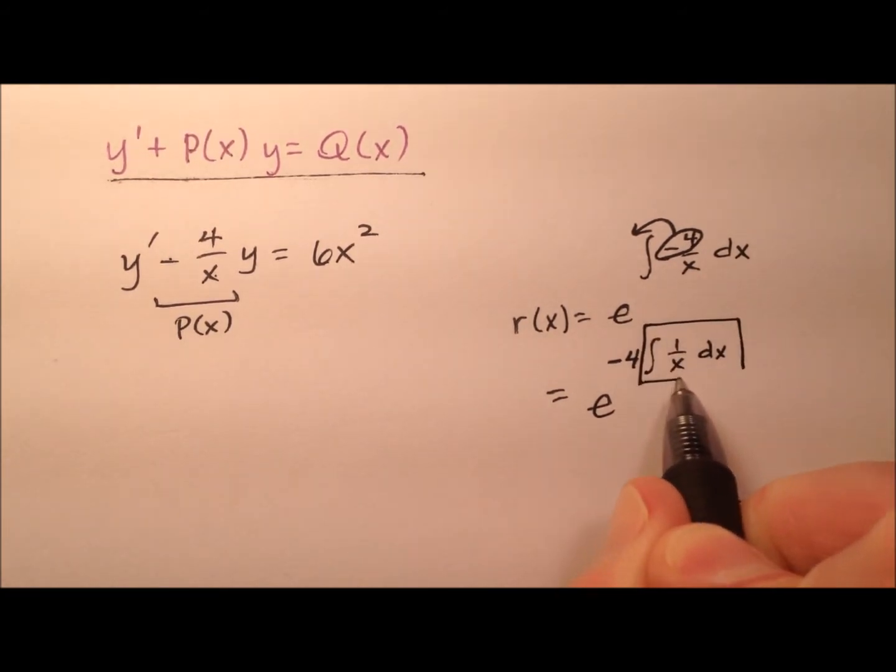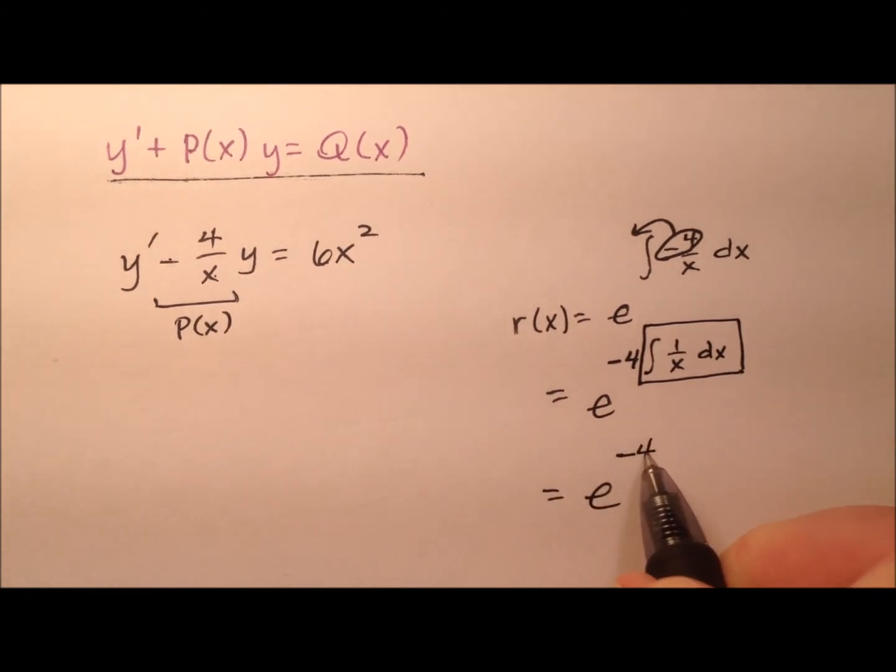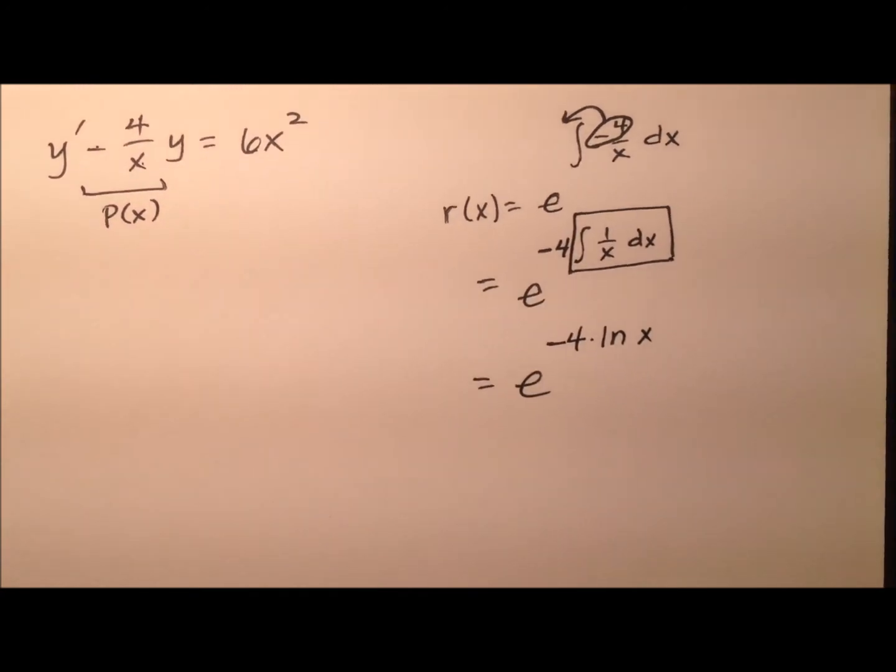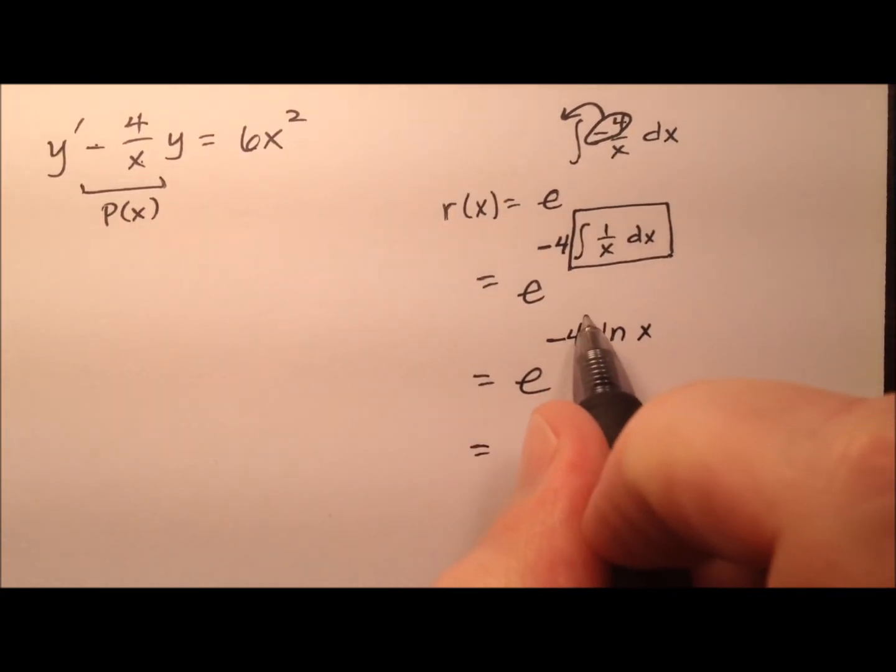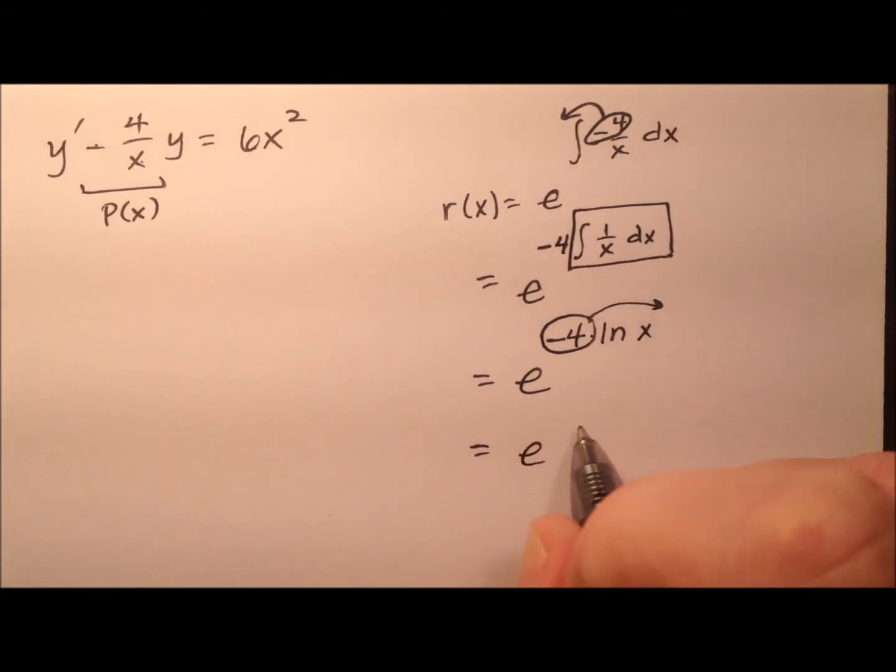And of course, this integral right there is very standard. So it's going to be e to the negative 4 times the ln of x, which I can use the properties of log and take this negative 4 and move him over as an exponent. So it's now ln of x to the negative 4th.